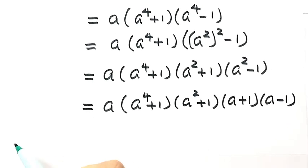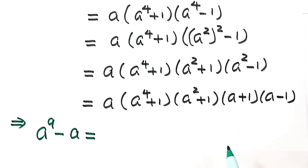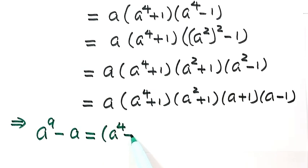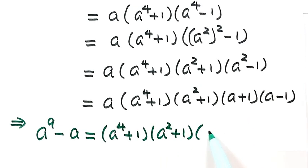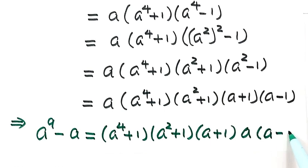Let's write down the result. So a to the power of 9 minus a equals, reorganizing: a to the fourth power plus 1, times a squared plus 1, times a plus 1, times a, times a minus 1.